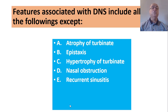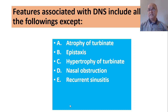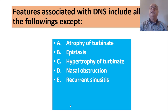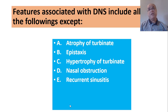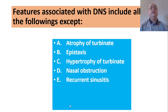Features associated with deviated nasal septum include all of the following except atrophy of the turbinates. Nasal obstruction is the main symptom of deviated nasal septum. Other features include recurrent sinusitis, epistaxis, and hypertrophy — especially compensatory hypertrophy of the inferior turbinate on the concave side in a C-shaped deflection, which leads to bilateral nasal obstruction. However, atrophy of the turbinates does not occur in deviated nasal septum.